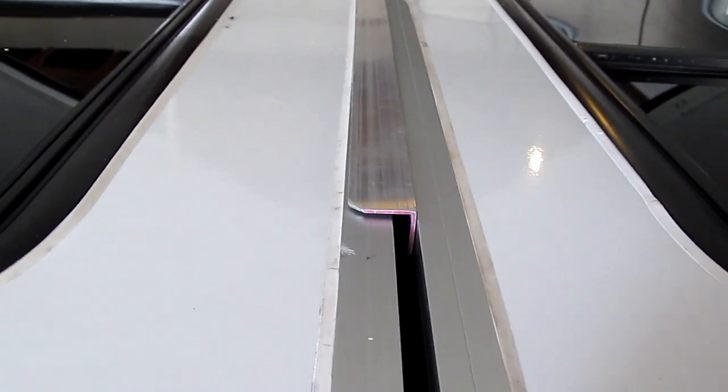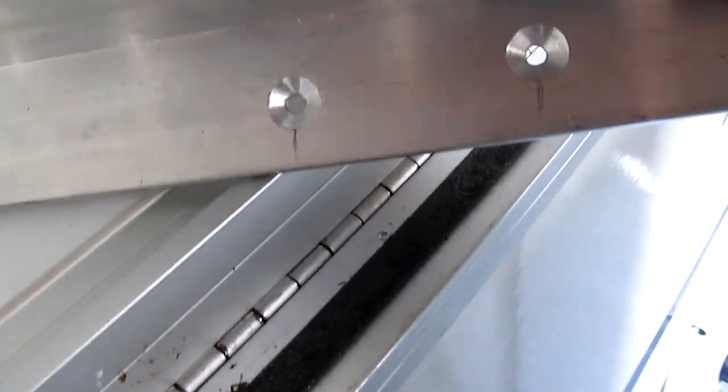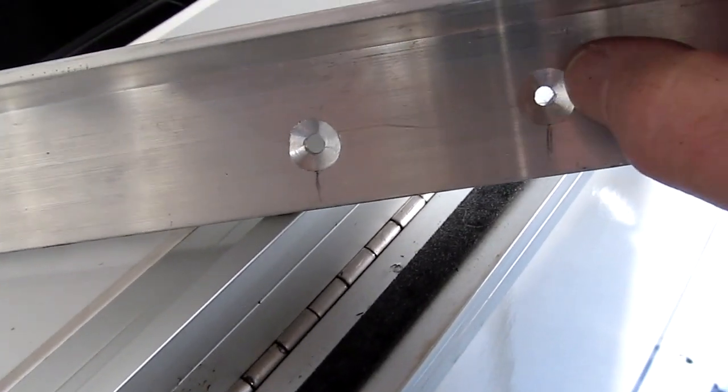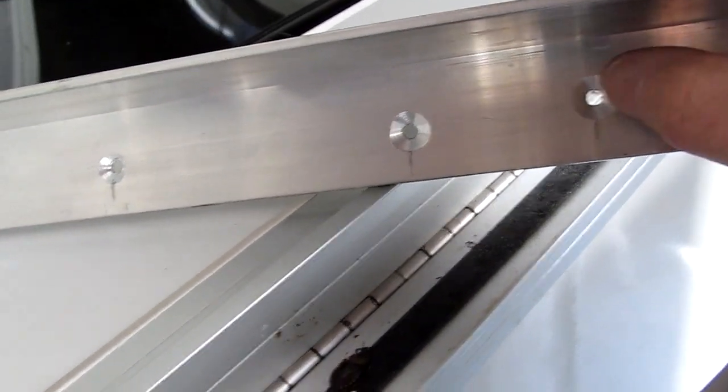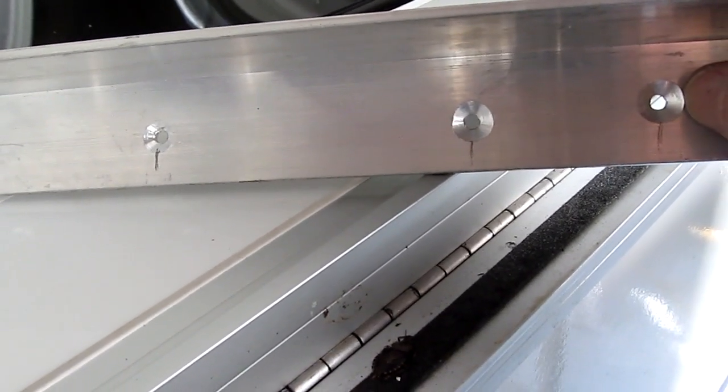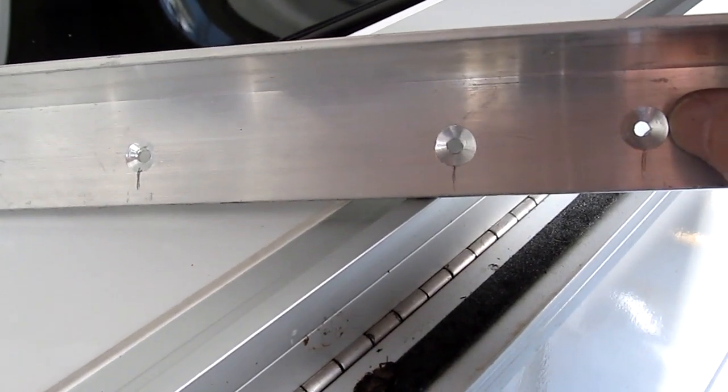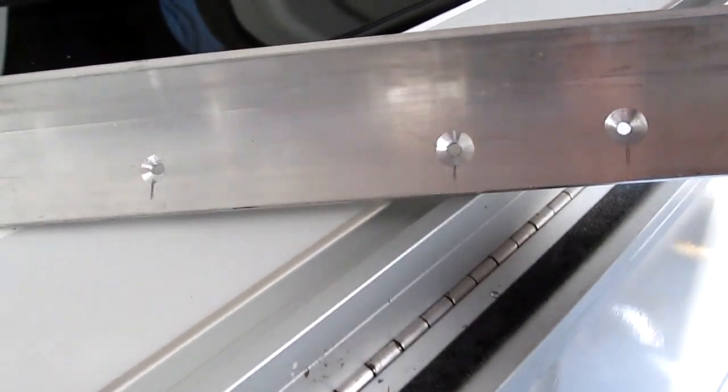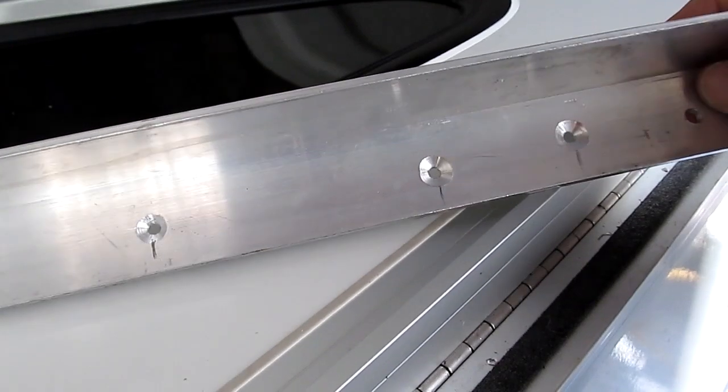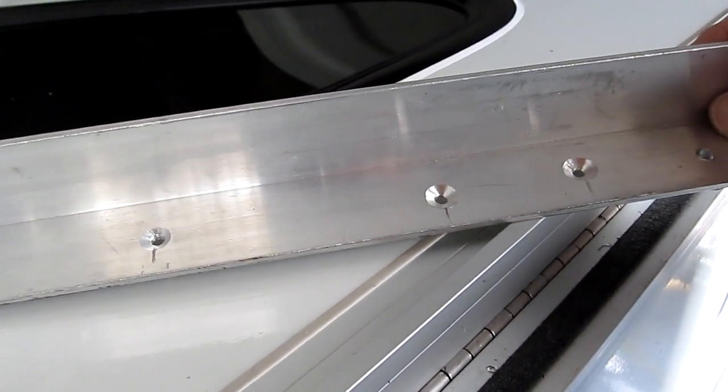I drilled some holes in it and then I put some flat-headed Phillips screws. When I drilled the holes I drilled a hole with the right size bit, and then I took a really big bit, I think that's a 3/8 or a half inch bit, and just made the holes recessed so that the heads don't stick up above the aluminum channel.